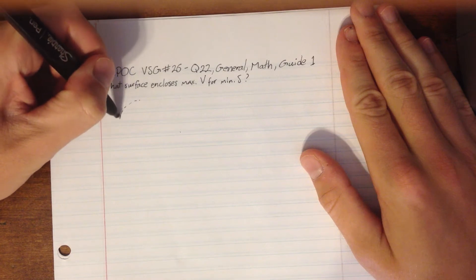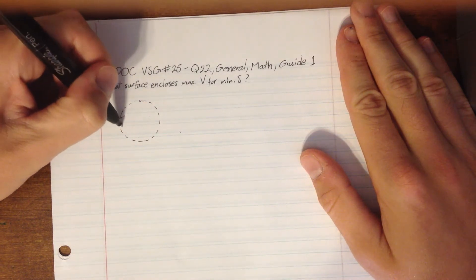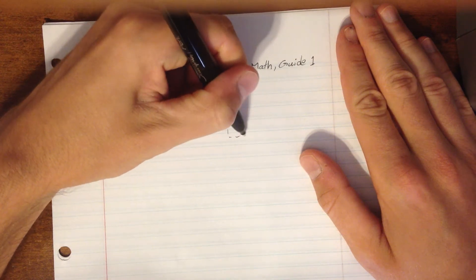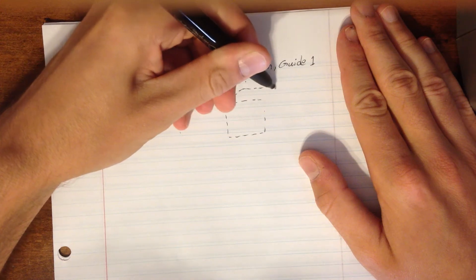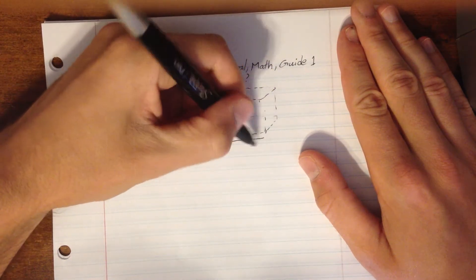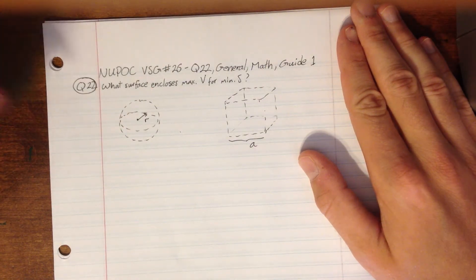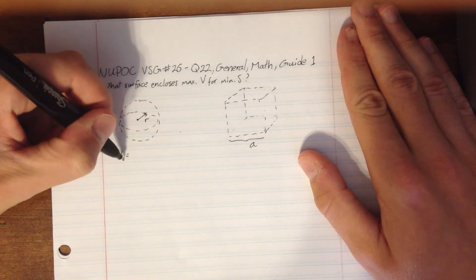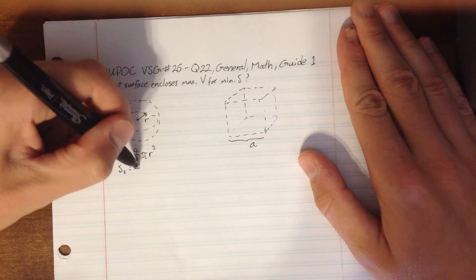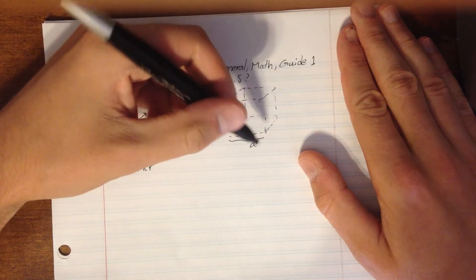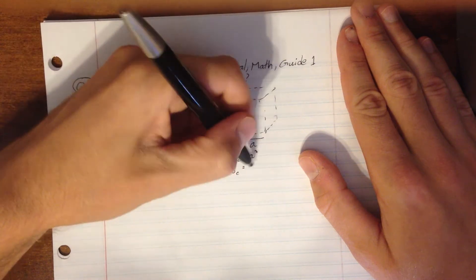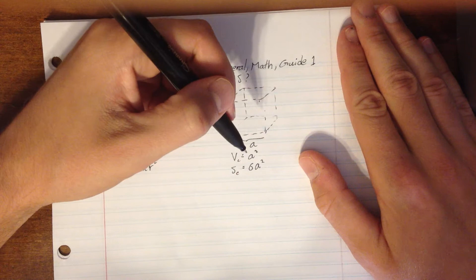Let's start by running down some equations for a sphere. We have a sphere with radius r, and a cube with side length a. The volume of the sphere Vs equals 4/3 π r³, and the surface area of the sphere equals 4π r². For the cube, the volume equals a³, and the surface area equals 6a².